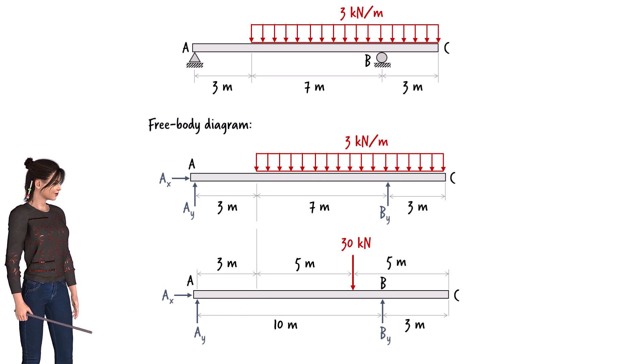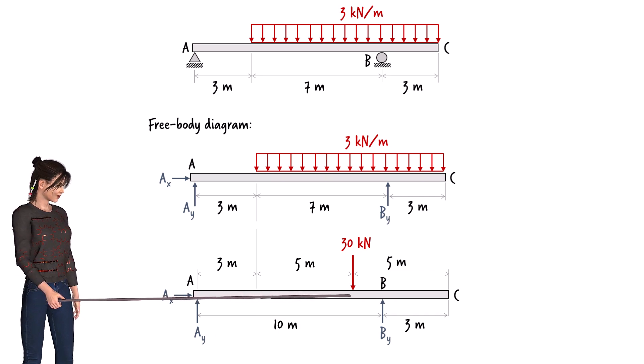We place the concentrated load at the center of the rectangle, which is located here, 5 meters to the left of point C. Hence, the distance from point A to the point of application of the load is 8 meters.